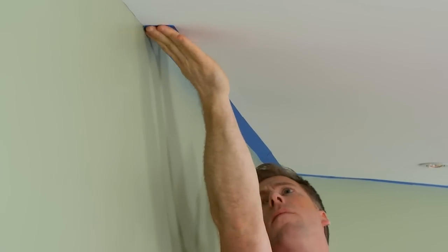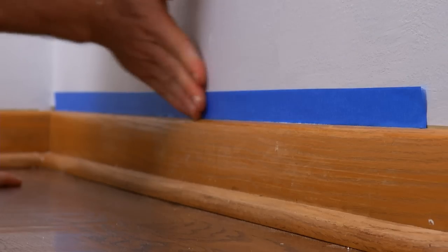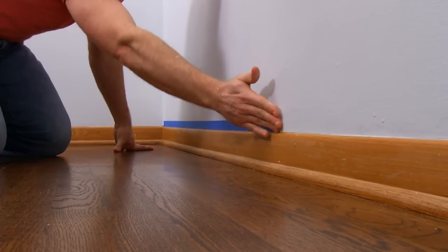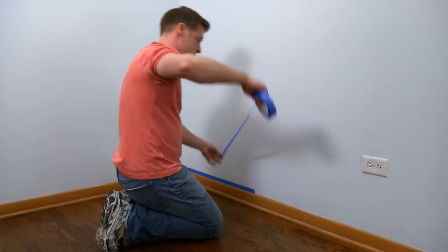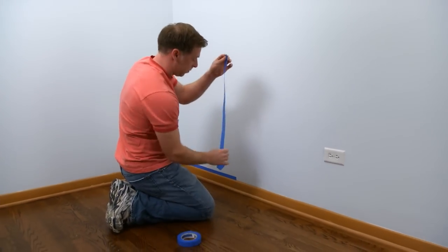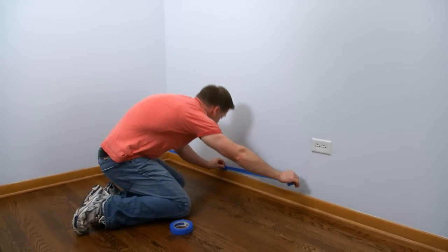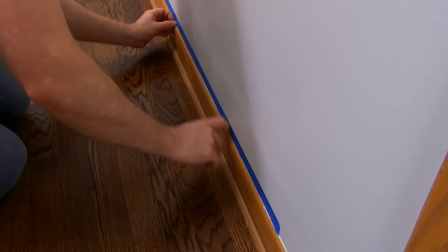Continue taping trim around windows, doors, and baseboards using long strips about the size of your arm. Only tape the areas you'll be painting today. You don't want to leave the painter's tape on too long before you paint.